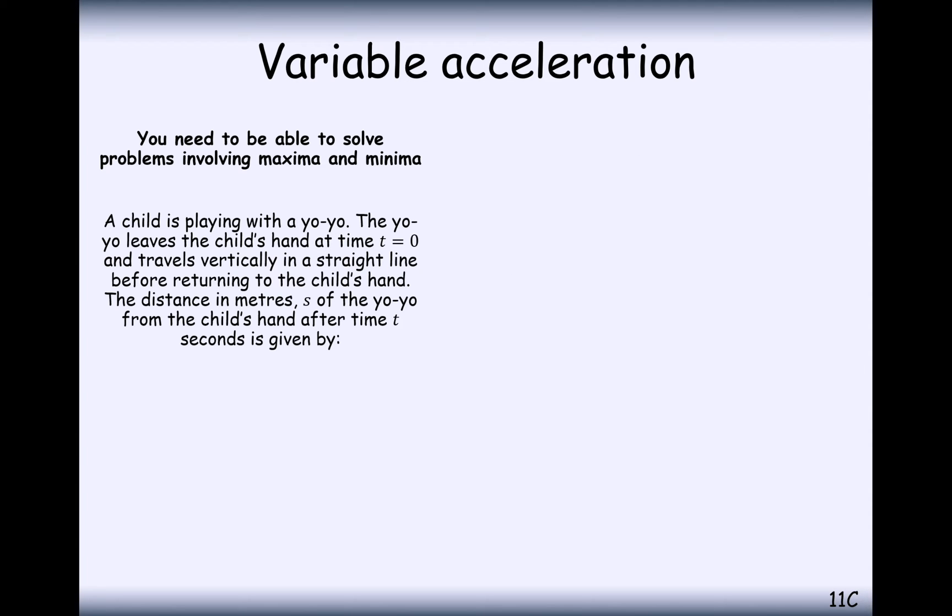So in this question here, a child is playing with a yo-yo. The yo-yo leaves the child's hand at t equals 0 and travels vertically in a straight line before returning to the child's hand. The distance in metres s of the yo-yo from the child's hand is given by this expression here.